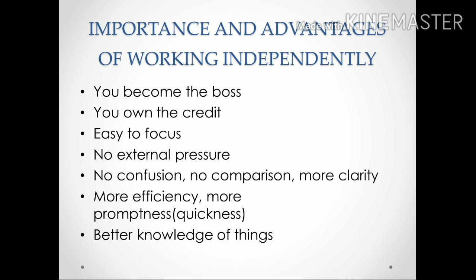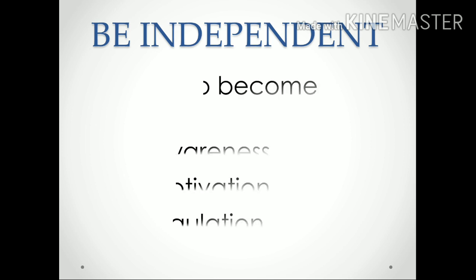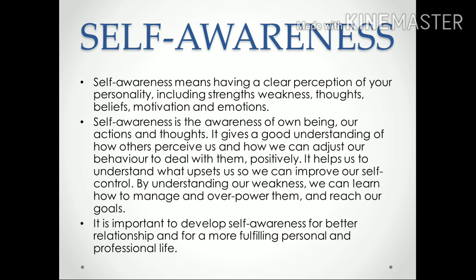Next is: how to be independent. The key to becoming independent lies in self-awareness, self-motivation, and self-regulation. First, self-awareness means having a clear perception of yourself — your personality, your strengths, your weaknesses, your thoughts, your beliefs, your motivation, and your emotions. This is called self-awareness.